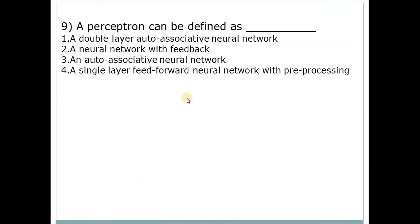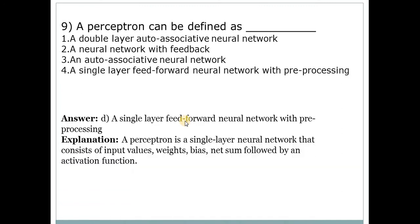A perceptron can be defined as... Answer is D, that is a single layer feed-forward neural network with pre-processing. So the single layer neural network consists of input values, Number 2 weights, Number 3 bias, Number 3 net sum, and it is followed by activation function.